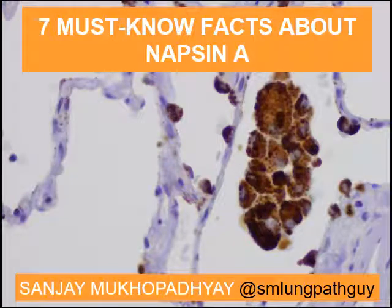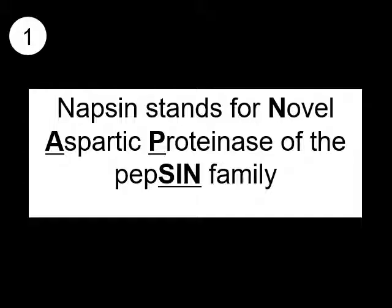Hi, so this is the first in a series of videos about immunohistochemistry, and we're going to start with a marker called Napsin A. I'm going to teach you seven important, essential, must-know facts about Napsin. The first is what it stands for. Napsin A stands for novel aspartic proteinase of the pepsin family, and as you can tell, it's an enzyme.